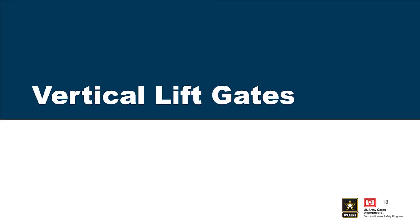Moving on to vertical lift gates — personally, these are my favorite types of gates because there are generally fewer problems associated with them. The most significant one is typically corrosion. A lot of these gates are built in older structures where most of the time they are submerged, but they are very robust structures. So even for seismic loading, even if these gates weren't designed for seismic loading, they were so over-designed on these older structures that they can withstand significant seismic effects. Just because a gate wasn't designed for seismic doesn't necessarily mean it's guaranteed to fail.